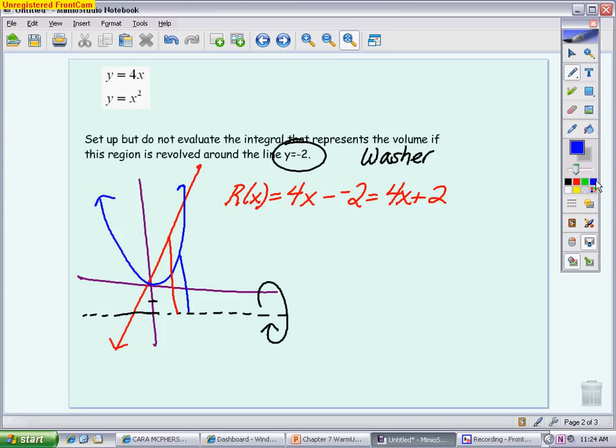Essentially, because I'm revolving around something that's two spaces below the axis, I've actually lengthened each radius by two units. Same thing when I do my small radius. My small radius, which I wrote in blue, is top minus bottom. The top is the parabola. So, that is x squared. And then, minus the bottom, which is negative 2, my small radius is x squared plus 2.